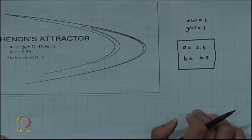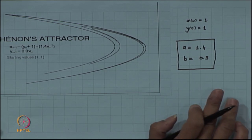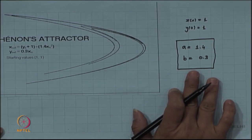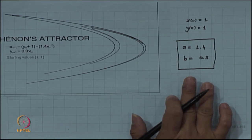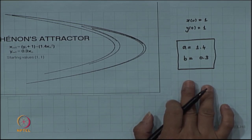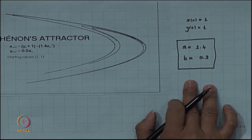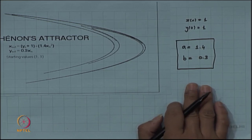What happens when you deviate the values of a and b? Most studies have been done by fixing b = 0.3; people have not studied much beyond that value for some reason. What the dynamics leads to for other values of a and b is still quite open and could be an interesting investigation.